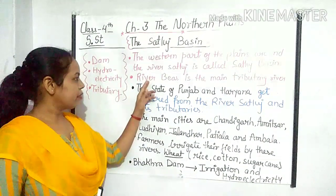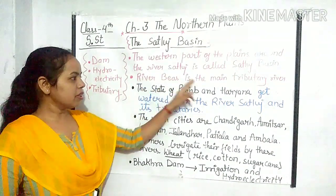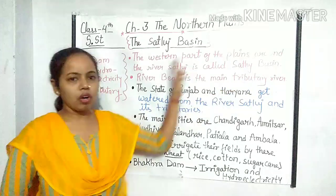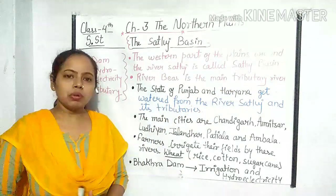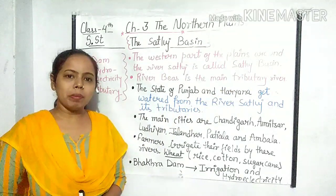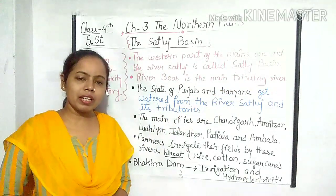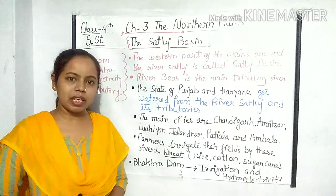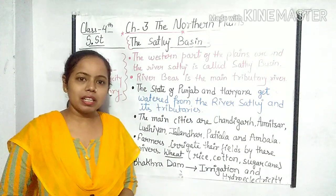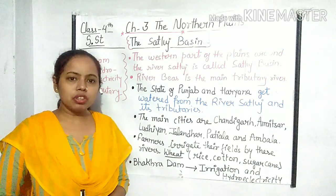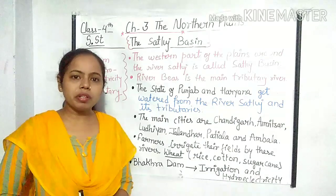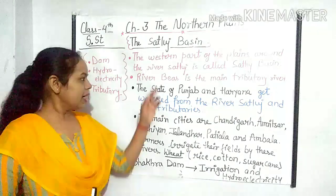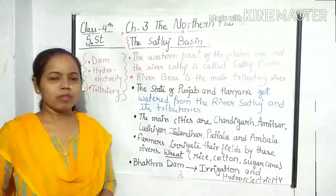River Beas is the main tributary river of River Satluj. Satluj river ki jo main tributary river hai, uska naam River Beas hai. Yeh aap yaad rakhega — Satluj river ki jo main tributary river hai, uska naam River Beas hai.